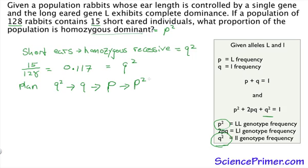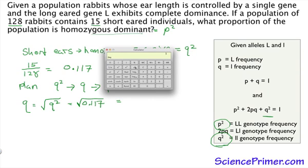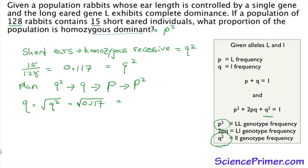So let's step into this. q equals the square root of q squared. So it's the square root of 0.117. I'll pull a calculator in for this one. 0.117 square root equals 0.342. So now we have q.